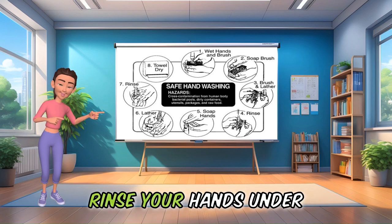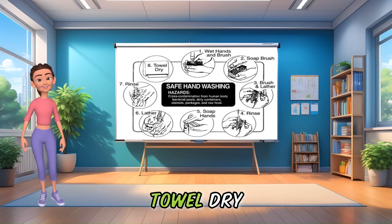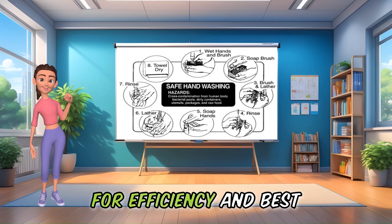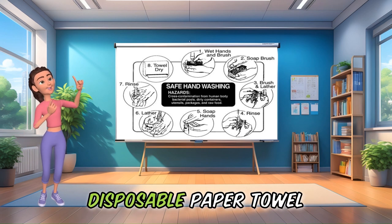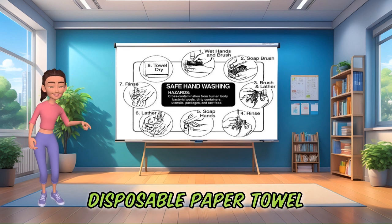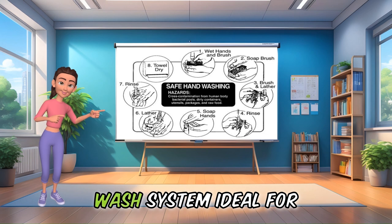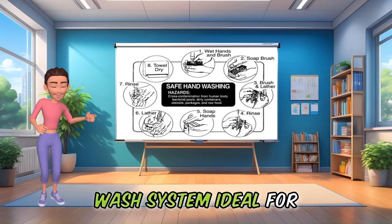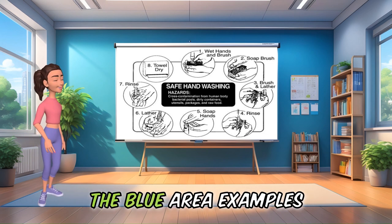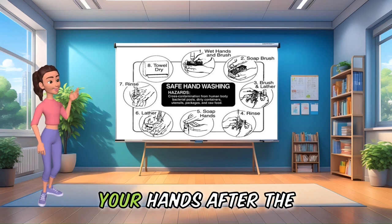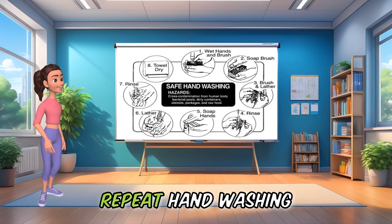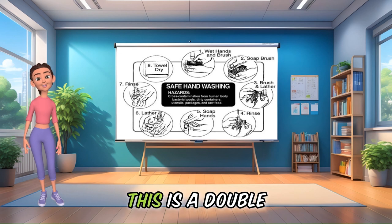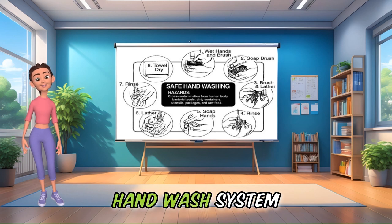Rinse your hands under the water and finally towel dry. For efficiency and best hygiene practices, use a disposable paper towel. This is a single wash system, ideal for washing your hands with the blue area examples. If you are washing your hands after the red area examples, then repeat hand washing. This is a double hand wash system.